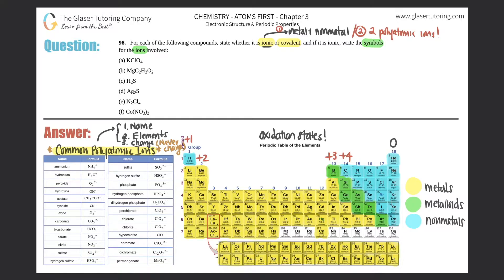Then we go to the negatives. Group 17 is minus one, because those elements can gain just one electron to become like a noble gas. Group 16 is negative two — oxygen, for instance, can gain two electrons. The nitrogen group is minus three. Group 14 is either plus or minus four depending on what the other element is. It's a pretty simple chart that will help you out greatly.